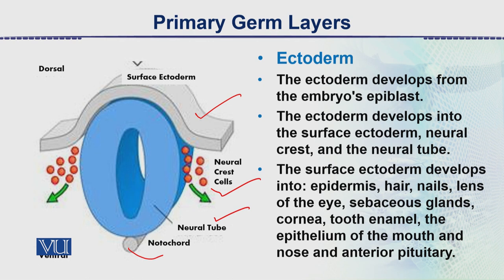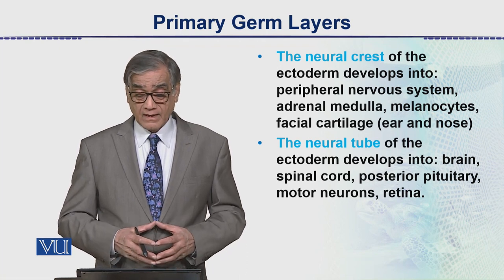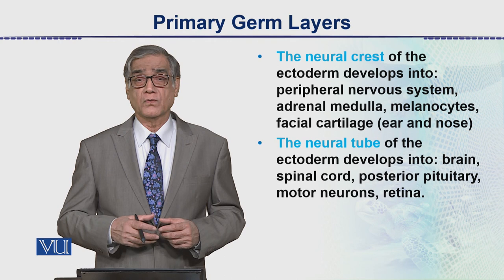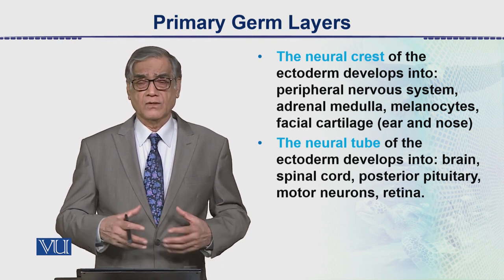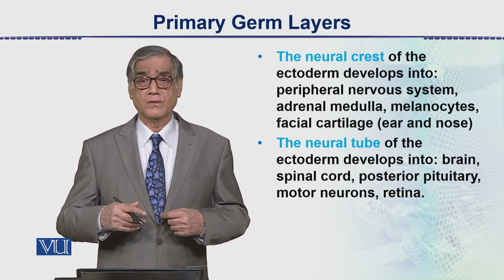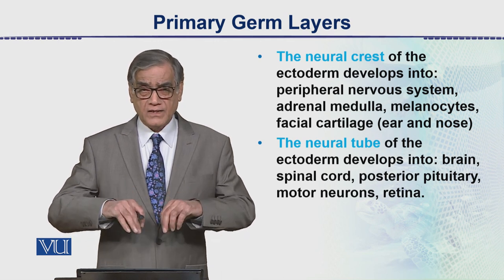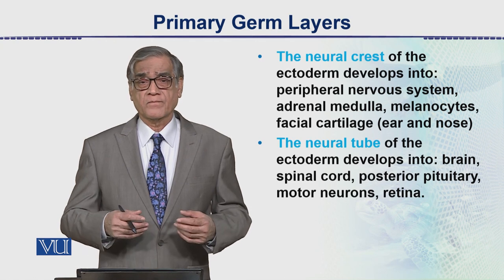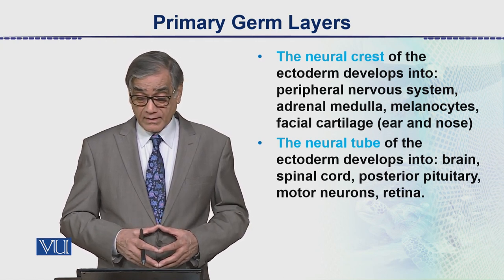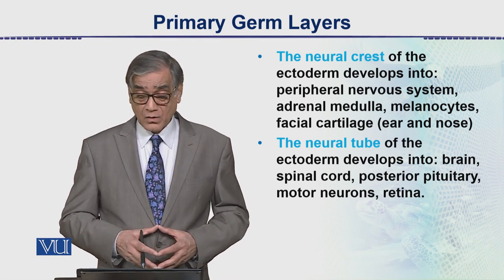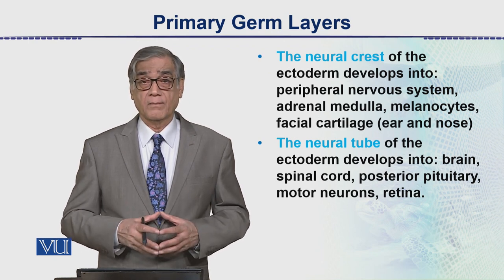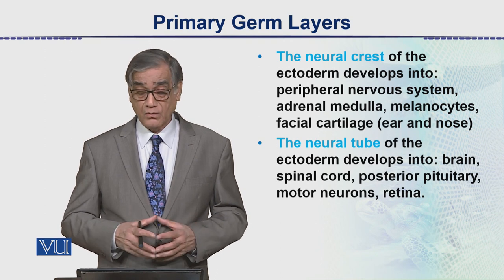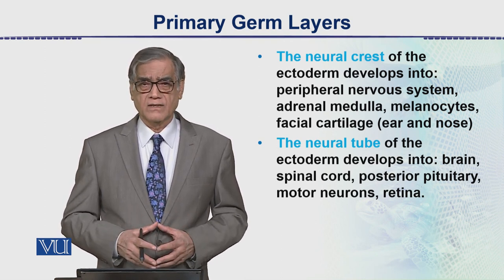The neural crest cells of the ectoderm develop into the peripheral nervous system, while the neural tube gives rise to the central nervous system. The neural plate gets invaginated and the folds come together to form the neural tube. From the neural crest cells, other structures develop — particularly the peripheral nervous system, adrenal medulla, melanocytes, and facial cartilage such as the ear and nose cartilage.